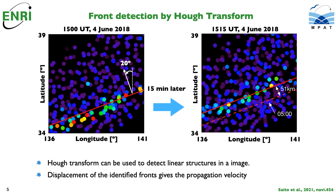15 minutes later, a displaced front, as shown on the right, was identified. This gives the propagation velocity of about 56 meters per second.